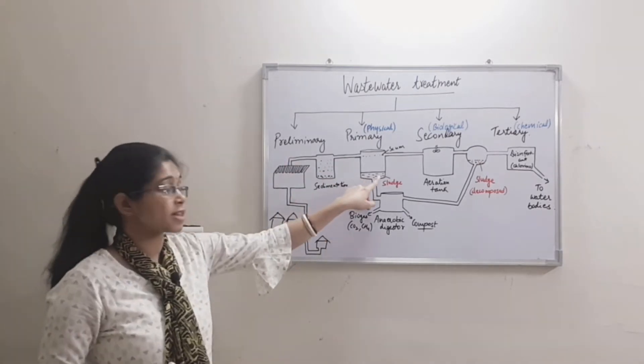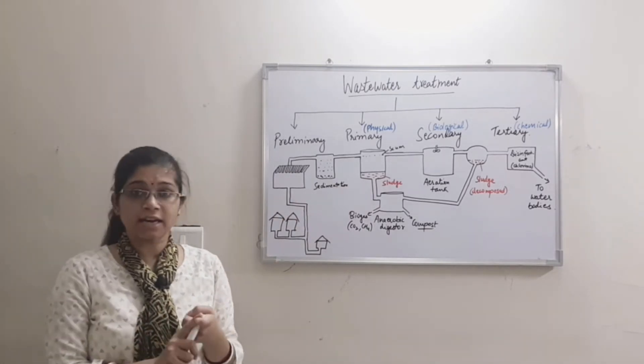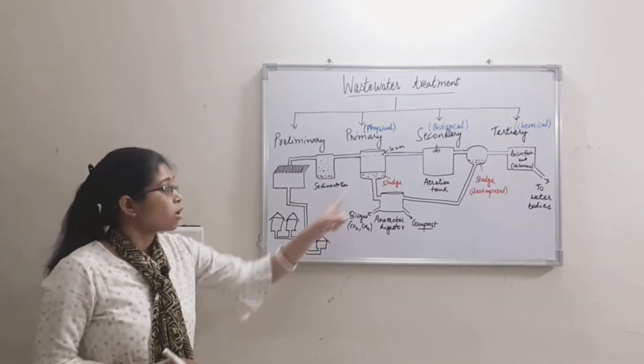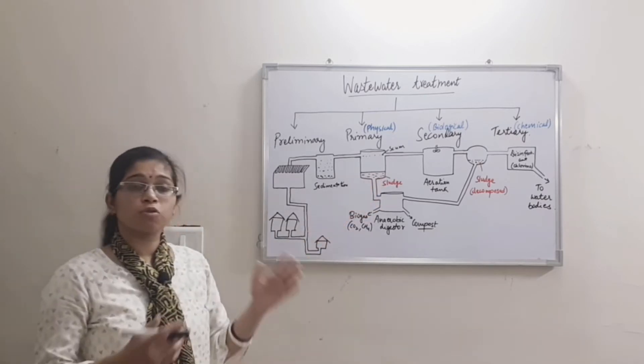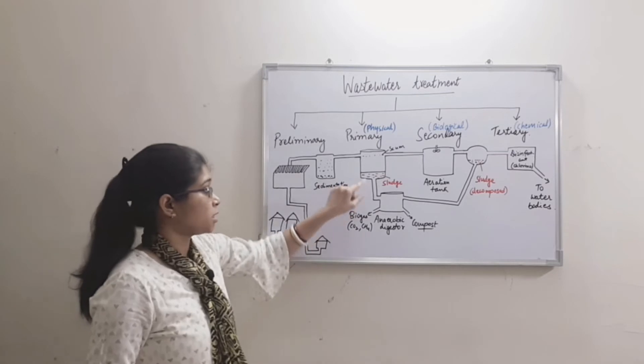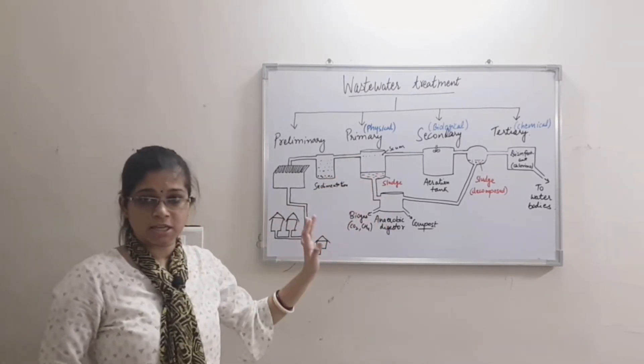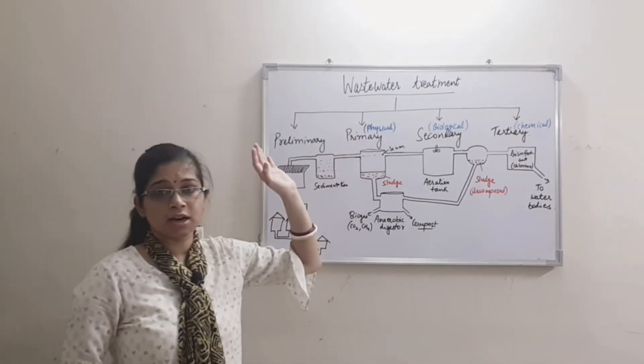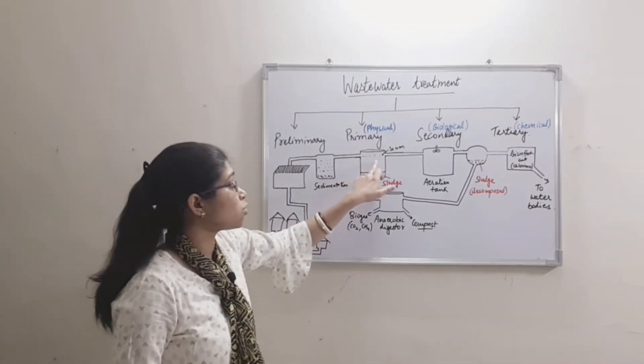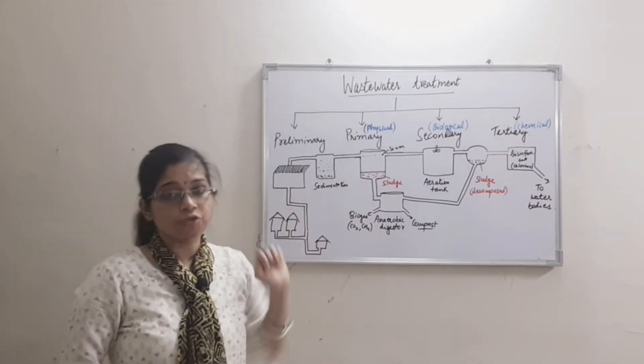We call this floating material scum, which we remove with a skimmer. The heavy particles including feces, sand, and gravel settle as sludge and are removed with a scraper. After this, the water is called clarified water.